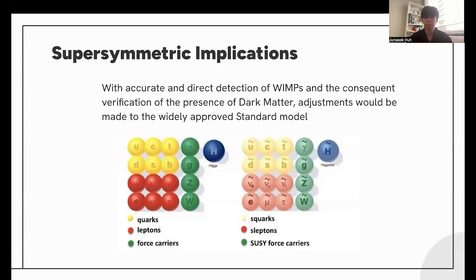The supersymmetric implications of dark matter. The theory of supersymmetry suggests that the standard model of particle physics is incomplete, and this is one hypothesized expansion. According to the framework, the particles in the standard model have associated superpartners, and that the standard model is incomplete.